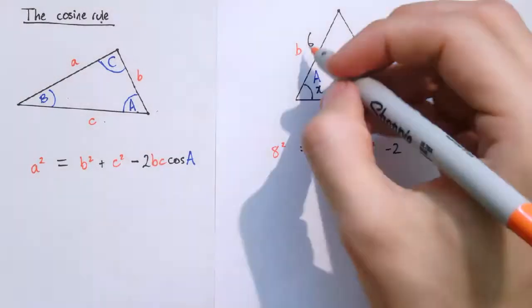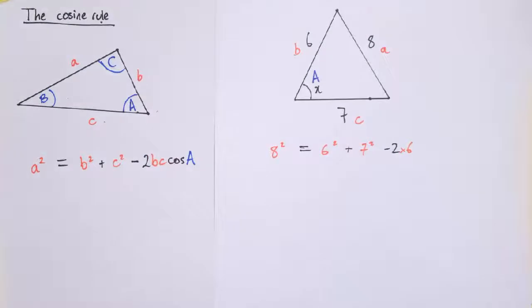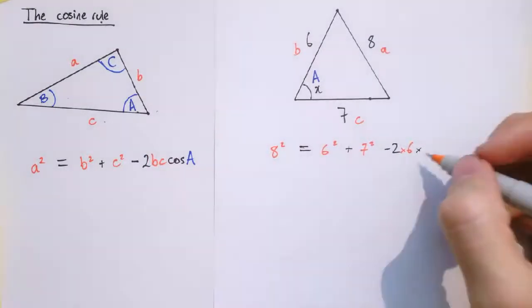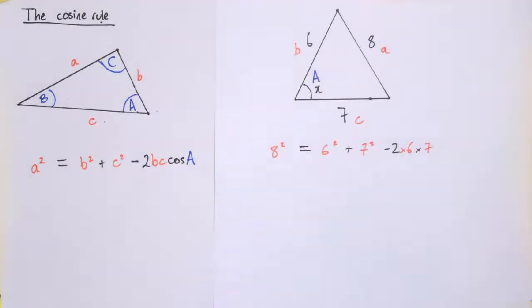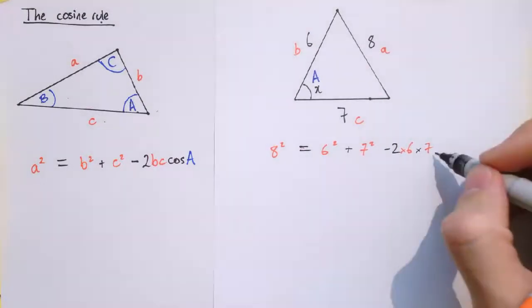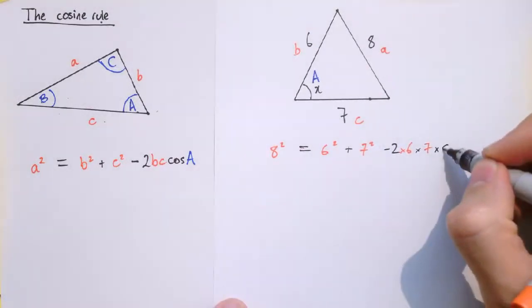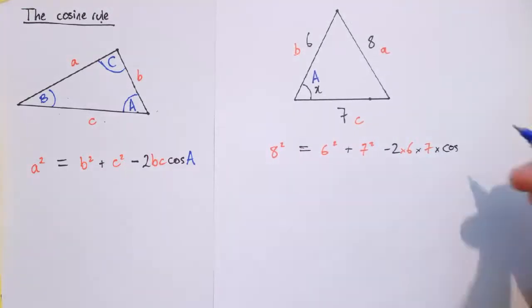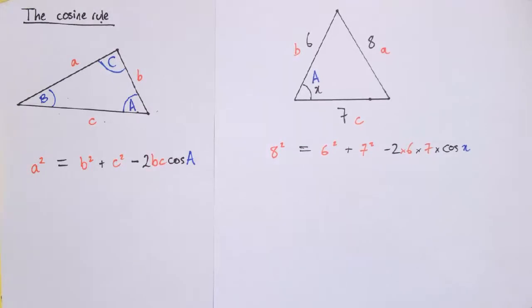Then minus 2 times b times c, so minus 2 times 6 times 7 times cos x.